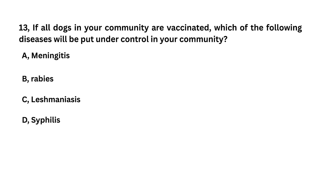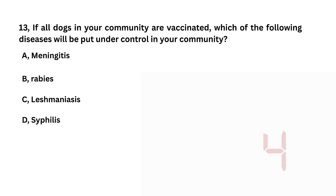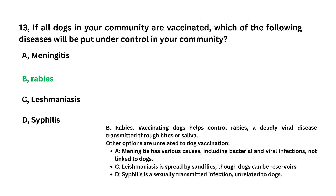If all dogs in your community are vaccinated, which of the following diseases will be put under control? Meningitis, rabies, leishmaniasis, scabies. Rabies is the answer.